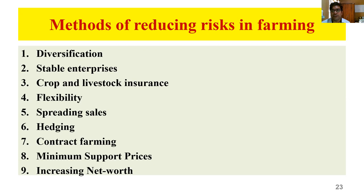Fifth, spreading sales: instead of selling the entire produce immediately after harvesting — which is also a strategy of shifting risk to the trader — if the farmer wants to gain or offset losses, he should spread the sales over time: selling after one month, after two months, and so on, against prevailing prices. Sixth, hedging: hedging is a financial instrument. For example, if you are buying a car, you also go for car insurance. The car is an investment; car insurance is a hedge — it may not help in avoiding the loss but can minimize or safeguard against economic loss.